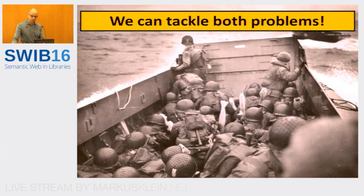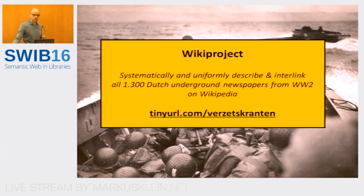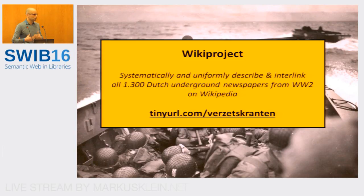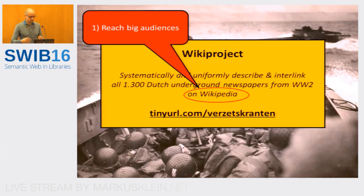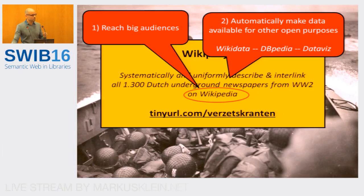To tackle both problems, I started a Wikipedia project. The aim is to systematically and uniformly describe and interlink all 1,300 illegal newspapers from the Second World War. I chose Wikipedia because over 80% of the Dutch population uses it — working in a separate environment would require a lot of extra effort to attract an audience. The second consideration is the open nature of Wikipedia: all data put in can also be taken out for other reuses, such as Wikidata, DBpedia, or data visualizations.